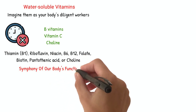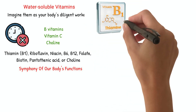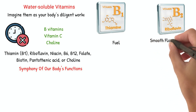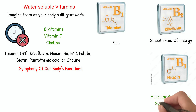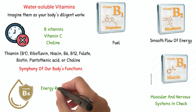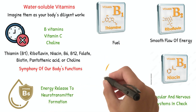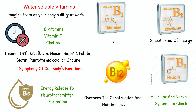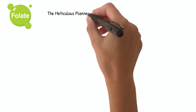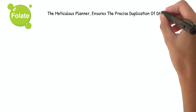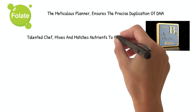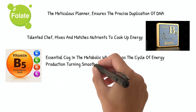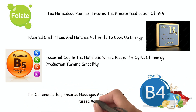Thiamin, the energetic conductor, leads the energy production process, transforming food into fuel. Riboflavin, like a skilled electrician, ensures the smooth flow of energy. Niacin, our body's mechanic, keeps the muscular and nervous systems in check. Vitamin B6, a versatile artist, juggles multiple roles from energy release to neurotransmitter formation. Vitamin B12, a master architect, oversees the construction and maintenance of our body's cellular structures. Folate, the meticulous planter, ensures the precise duplication of DNA, vital for new cell creation. Biotin, like a talented chef, mixes and matches nutrients to cook up energy. Pantothenic acid, an essential cog in the metabolic wheel, keeps the cycle of energy production turning smoothly. Choline, the communicator, ensures messages are efficiently passed across nerve cells.